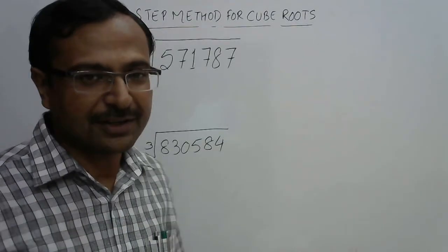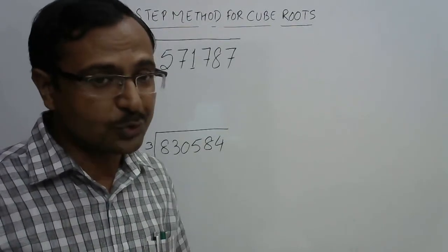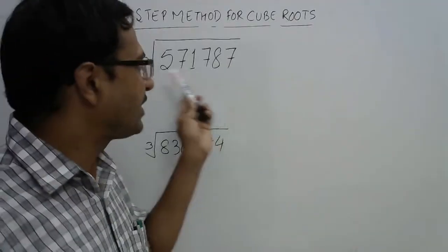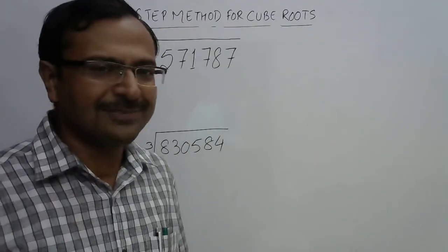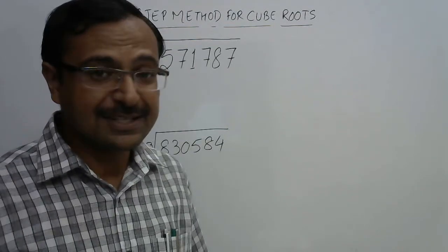Obviously making prime factors itself is a very tedious process, but through this method, if this number is a perfect cube, you will be able to guess the cube root within how many seconds? Four seconds. Let's see the two steps which are involved in this.